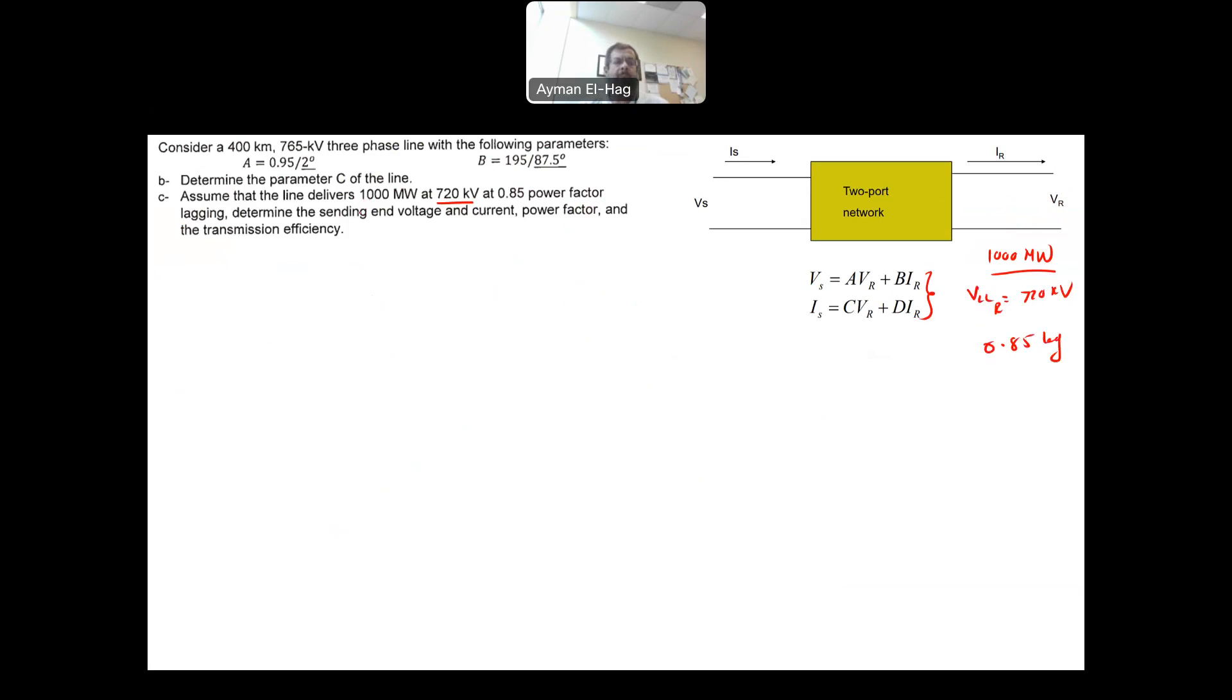We want to find sending end voltage and current using these two formulas. Power factor at the sending end and the transmission line efficiency. So we start by finding VR and IR. Your VR is equal to 720 divided by root 3. And this will be our reference. So the angle is basically 0. And this is in kilovolts.